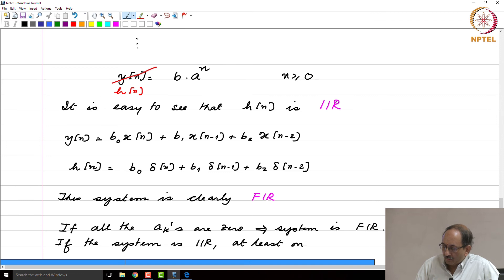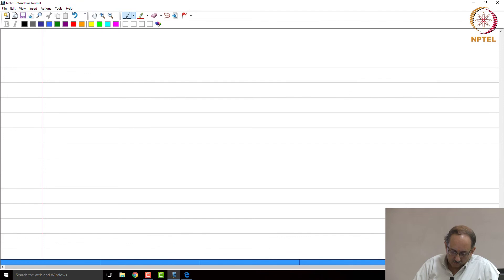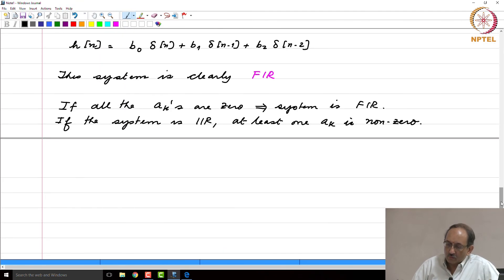The question arises: if one aₖ is non-zero, does it mean the system is IIR? Notice carefully what statement we are making here. If the system is IIR, at least one aₖ is non-zero, and the previous statement is just the contrapositive of the bottom statement.